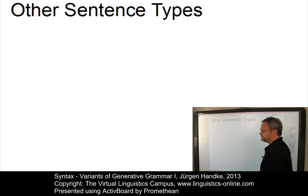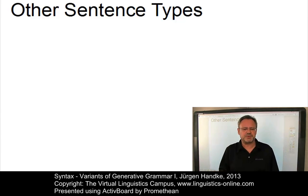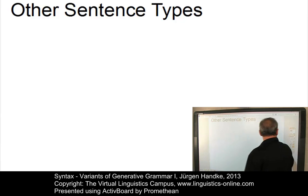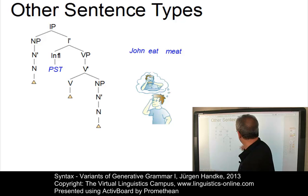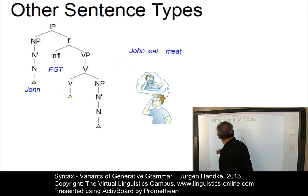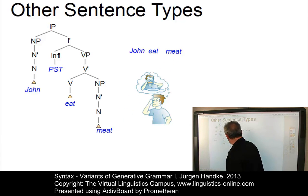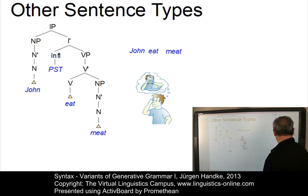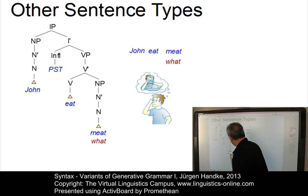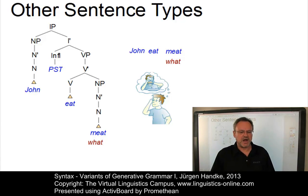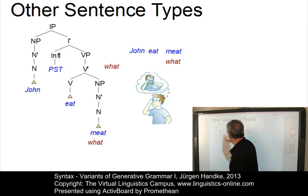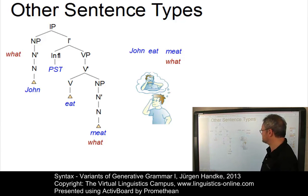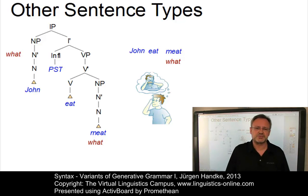Or take the following example. Intuitively, there is a relationship between a declarative sentence and its interrogative counterpart: 'John ate meat.' We can easily transform this into a question: 'John ate what?' – a sort of echo question. But how can we convert this sentence into a real question, for example a WH-question? In such a case, we would have to move 'what' to the beginning of the sentence – an enormous problem for a simple phrase structure grammar.